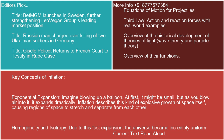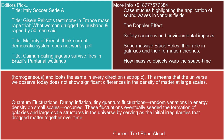Homogeneity and isotropy: Due to this fast expansion, the universe became incredibly uniform — homogeneous — and looks the same in every direction — isotropic. This means that the universe we observe today does not show significant differences in the density of matter at large scales.